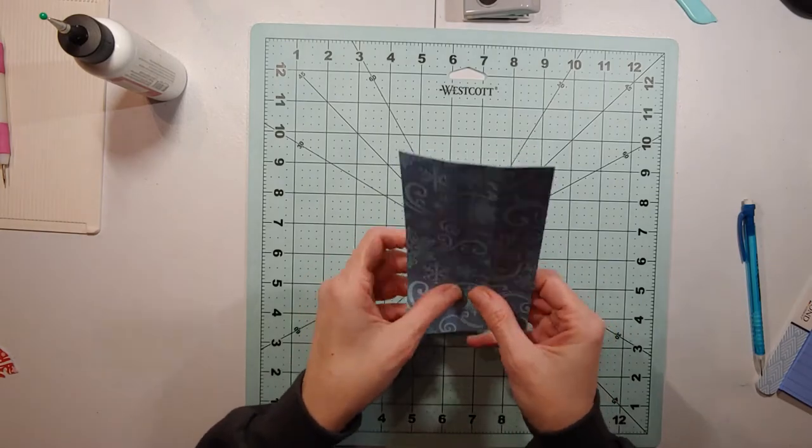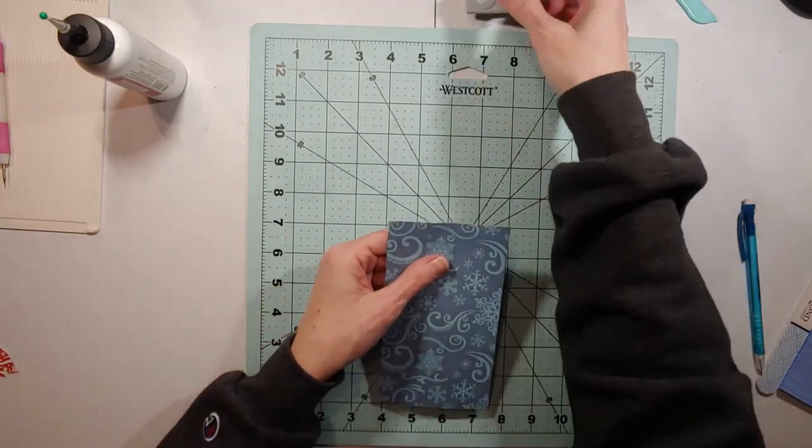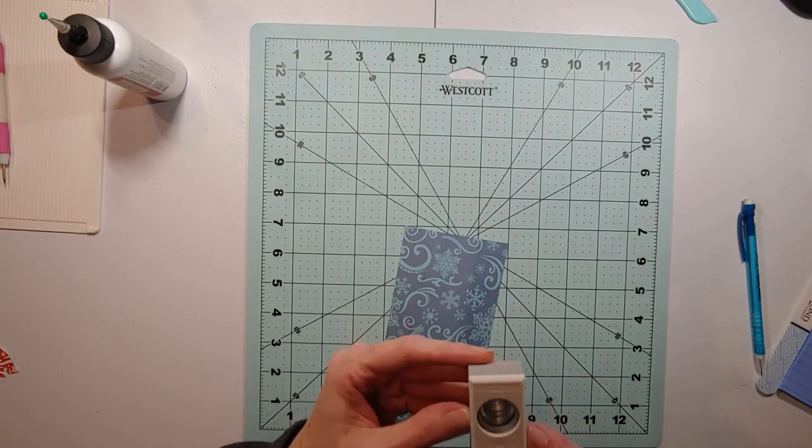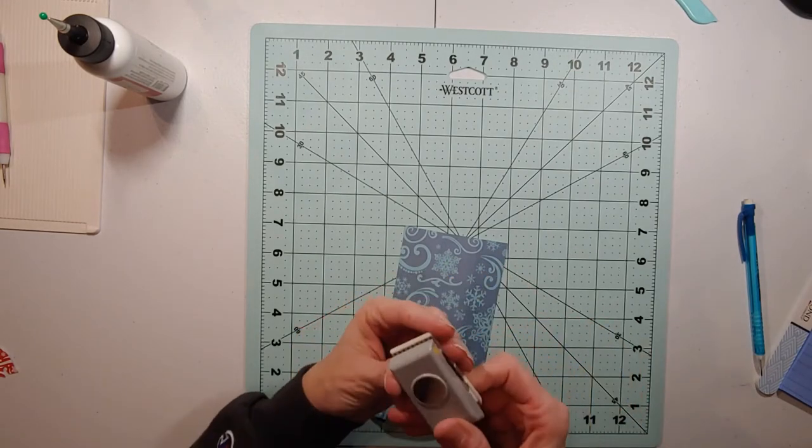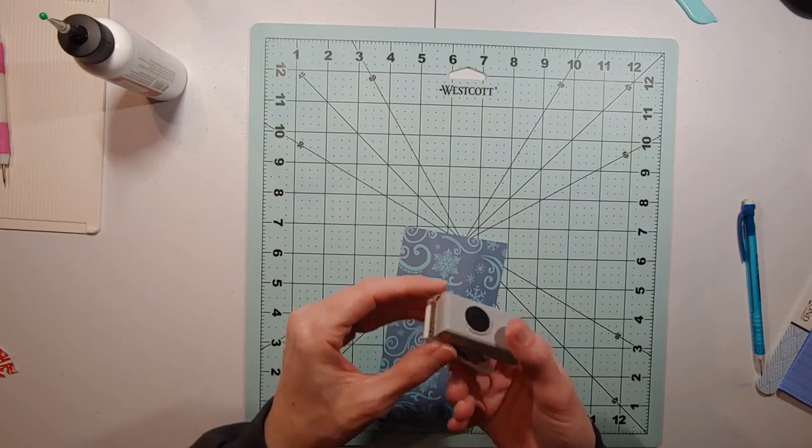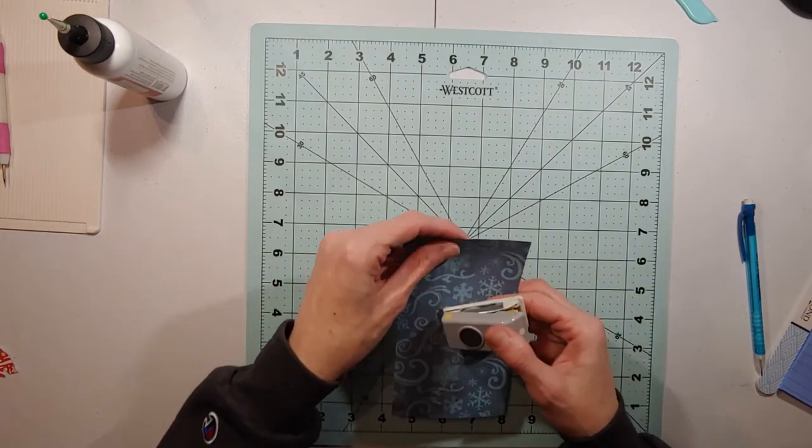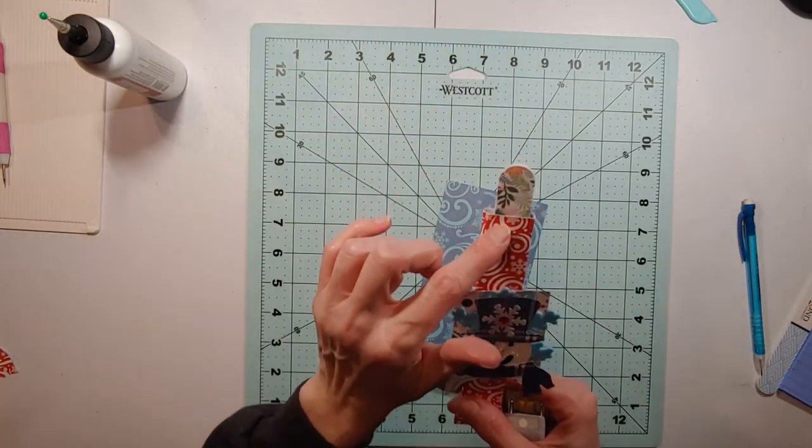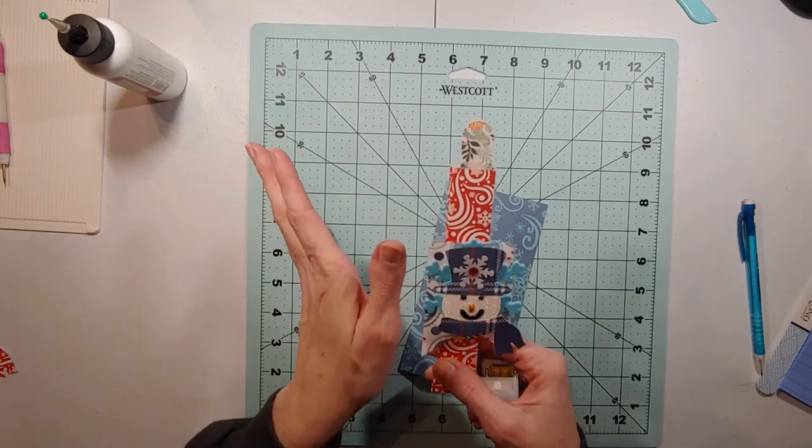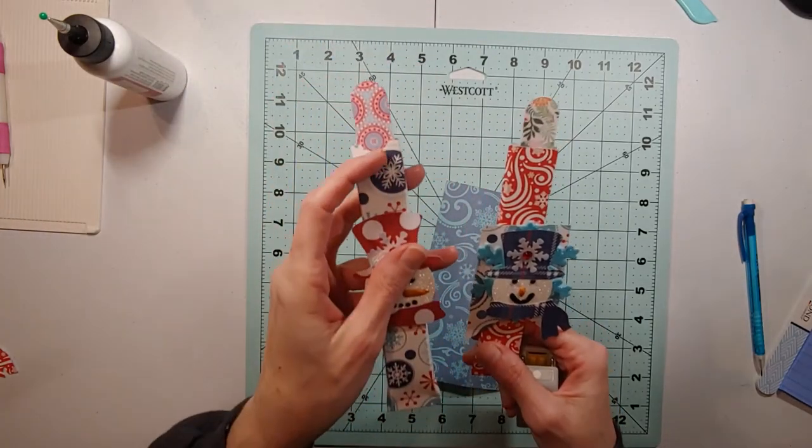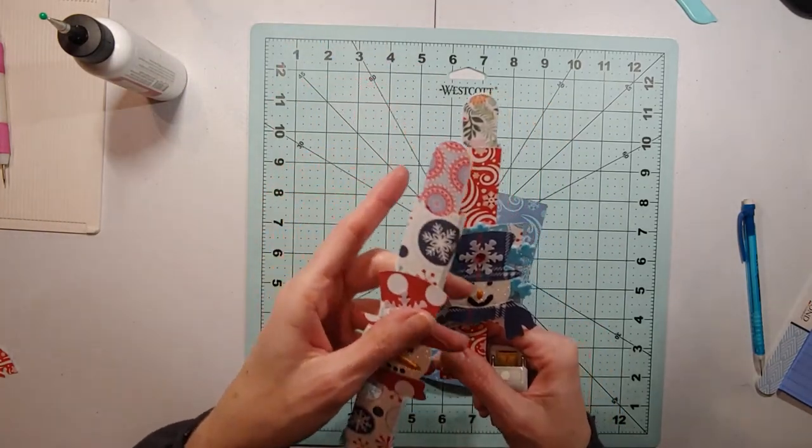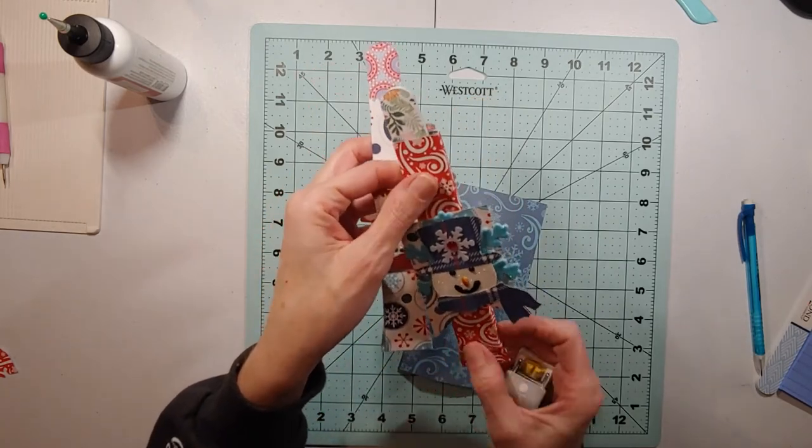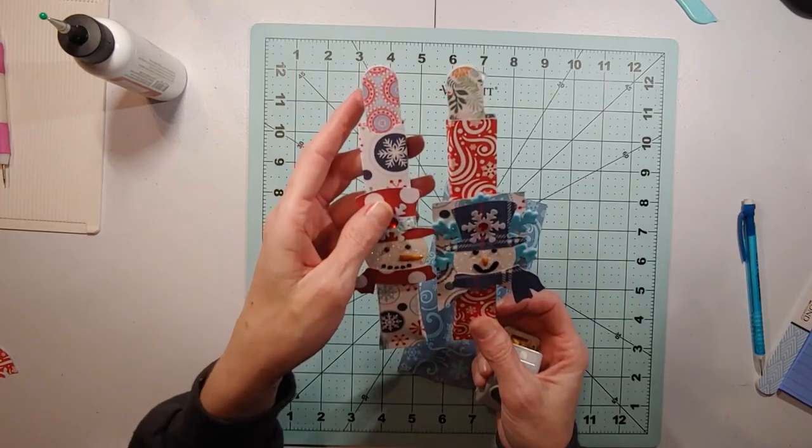But before you glue it down, if you have a little hole puncher, I think this is by EK Success, I don't really know the dimension. It's a really small one to get one of these. This one I forgot to punch, but it still worked fine. So you don't have to punch. And this one I did punch. I hope you can see that. So I punched this one and I forgot to punch this one. I had put this one together before I punched. But that's okay. I think it looks fine either way.